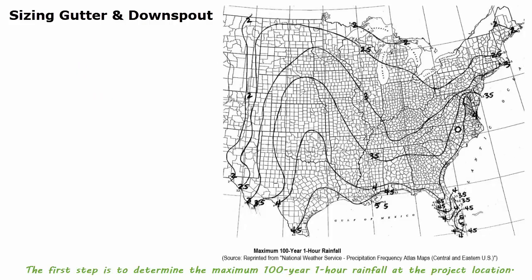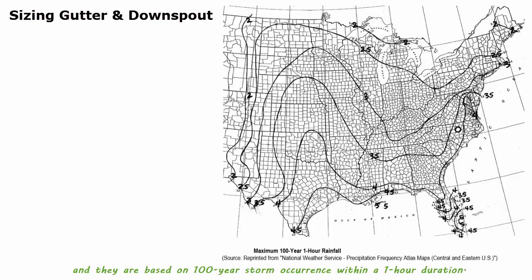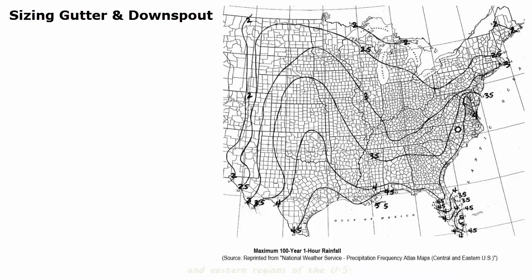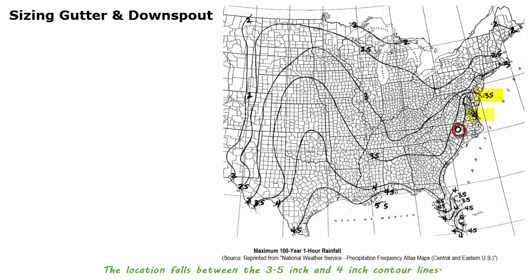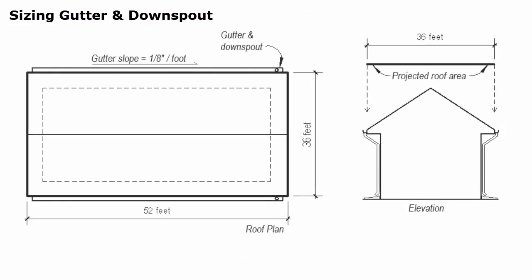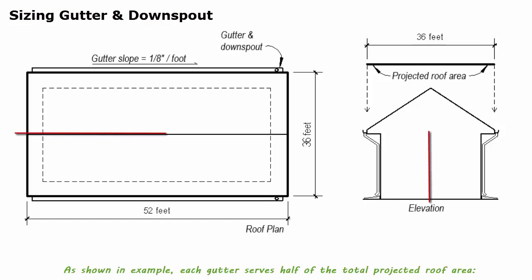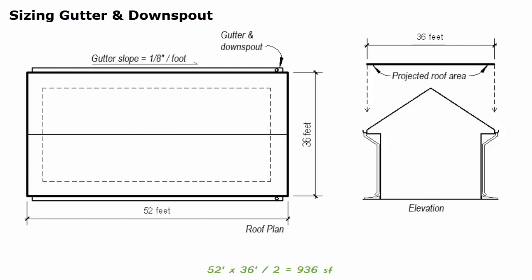The first step is to determine the maximum 100-year, one-hour rainfall at the project location. Design rainfall rates are established by the US Weather Bureau based on 100-year storm occurrence within one-hour duration. This map shows the maximum 100-year, one-hour rainfall for the central and eastern US. Raleigh, North Carolina is located in Wake County; the location falls between the 3.5-inch and 4-inch contour lines, so 4 inches is selected to represent the worst-case scenario. The second step is to calculate the projected roof area for each gutter; each gutter serves half of the total projected area, which is 52 times 36 divided by 2, equaling 936 square feet.